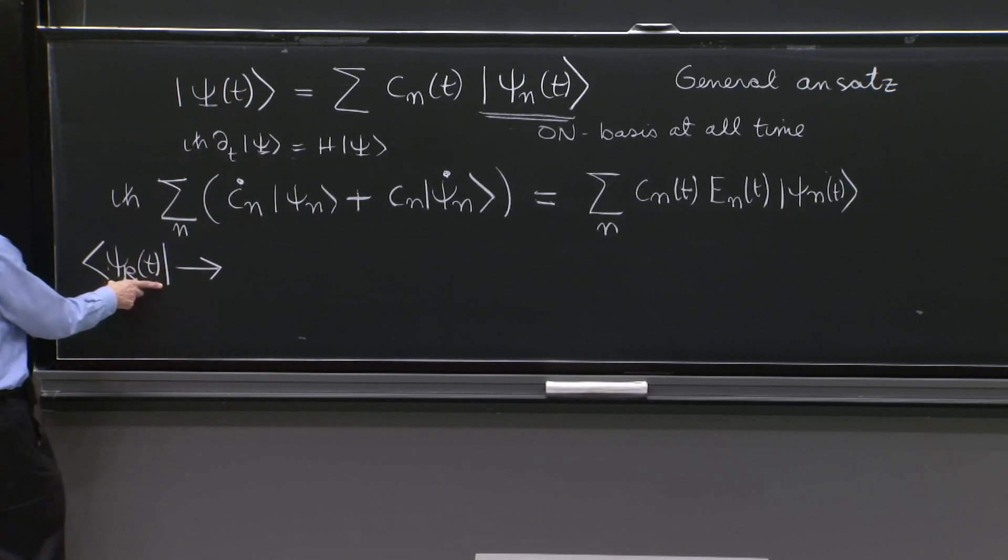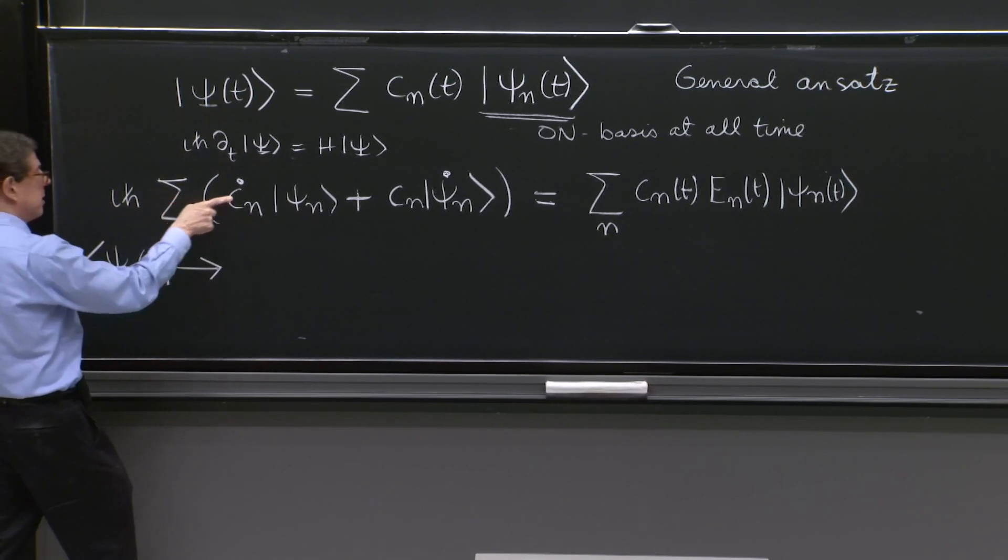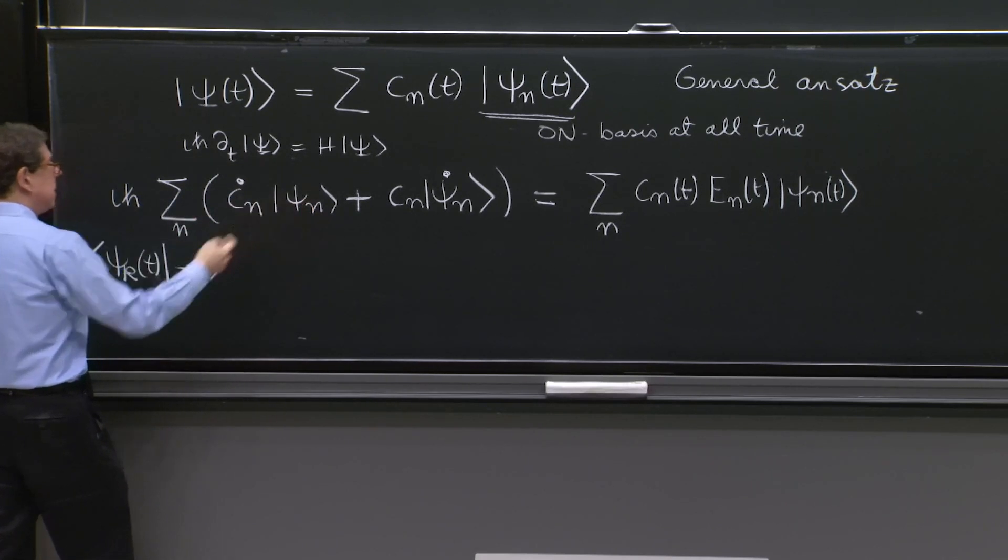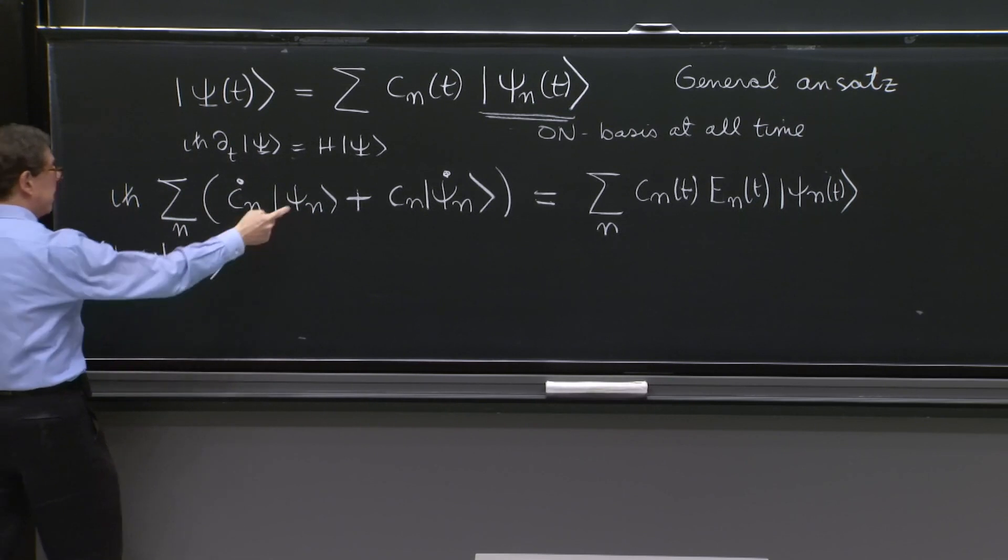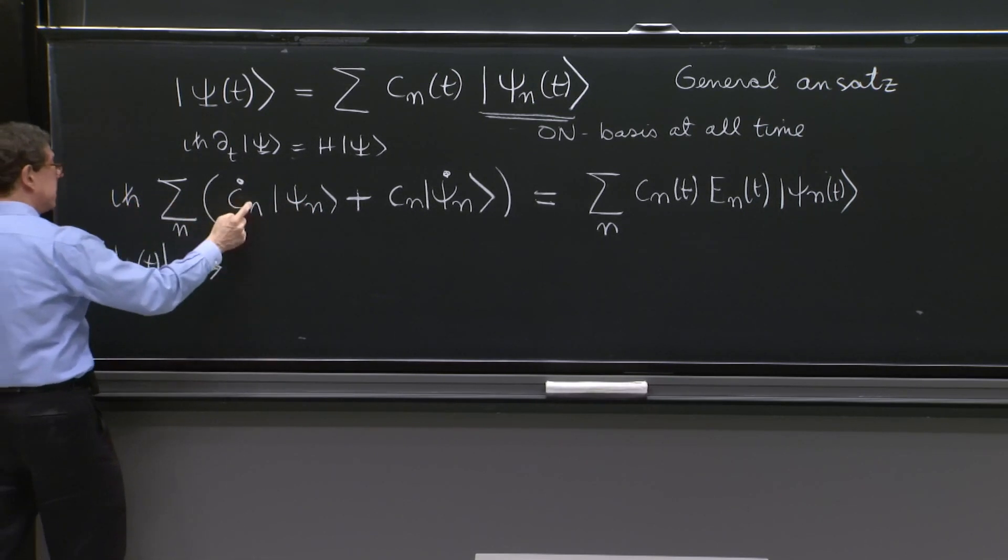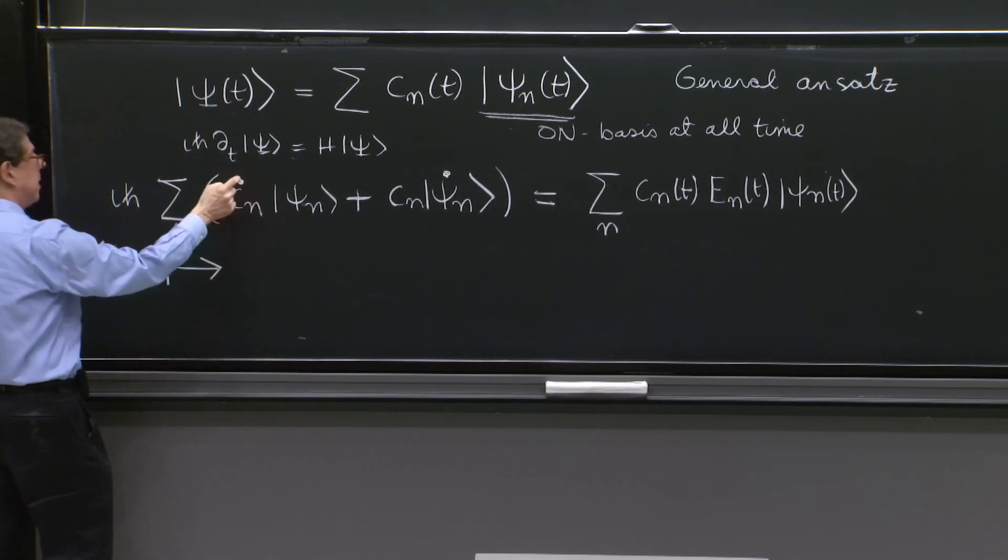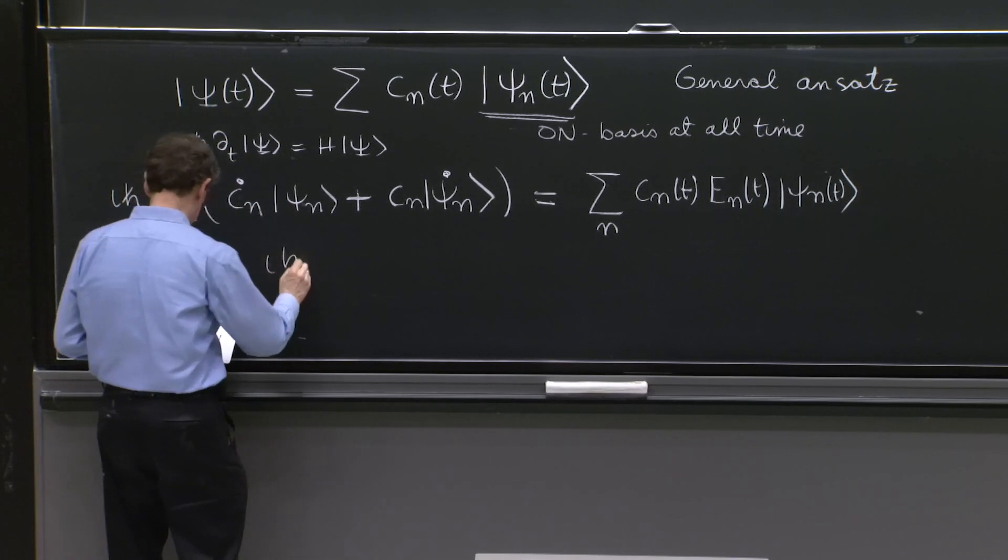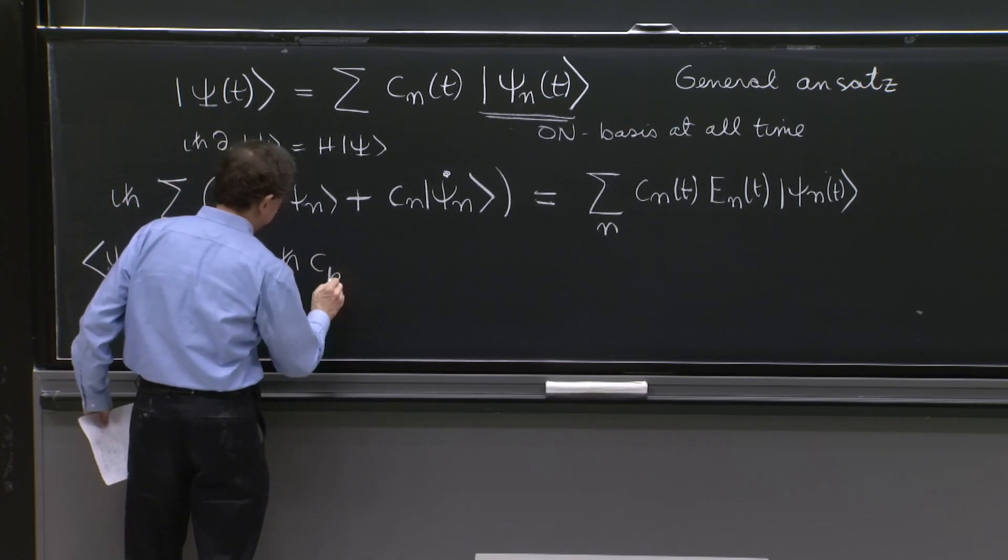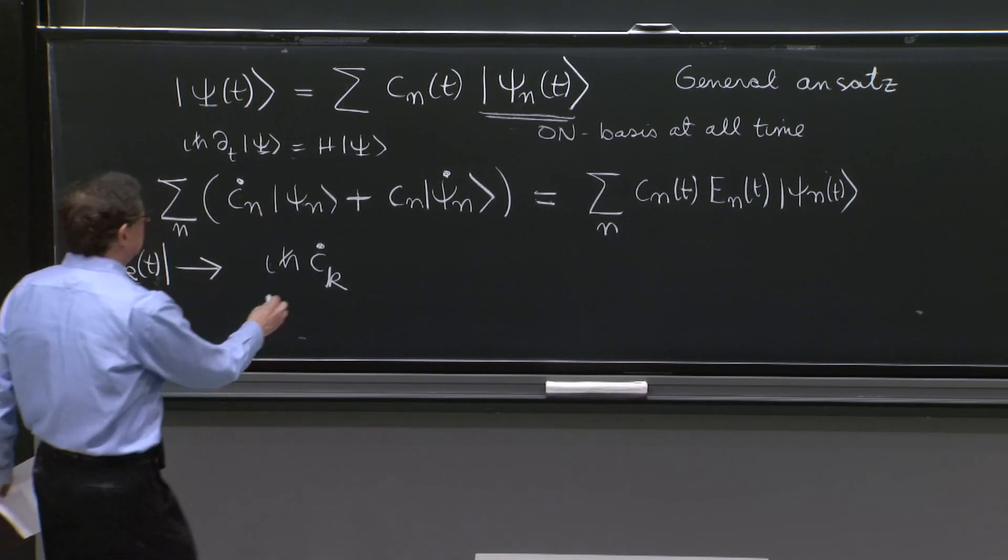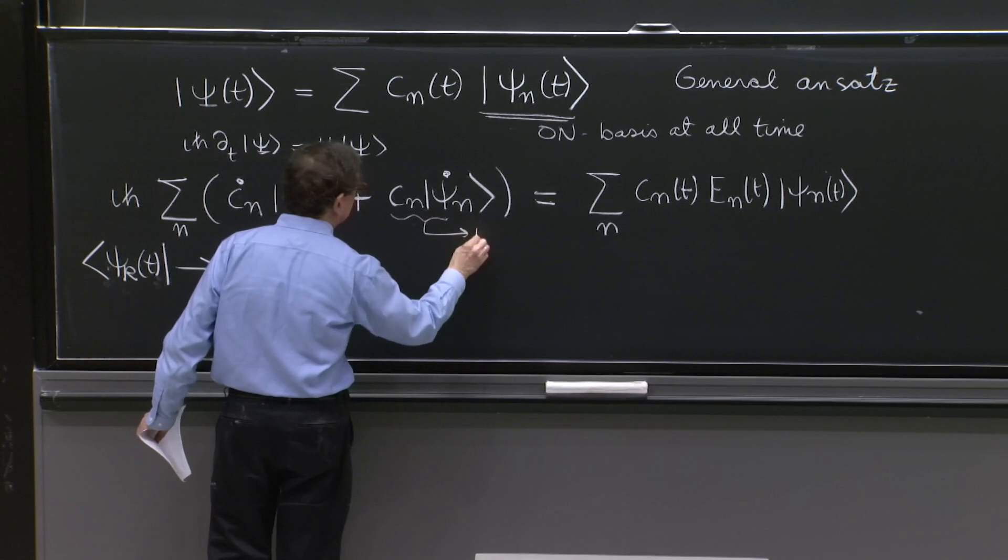Since these states are orthonormal, psi k, when it comes here, this is a function of time. Psi k hits the psi n, that's a Kronecker delta. The sum disappears and the only term that is left here is ck dot. So we get i h bar ck dot from this term.